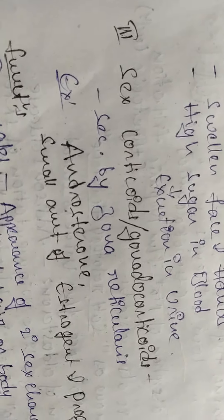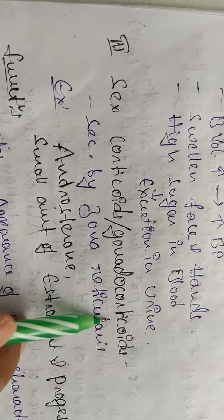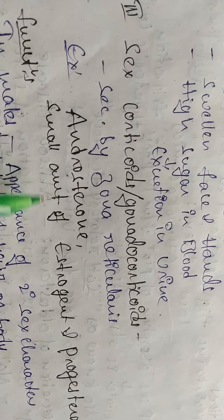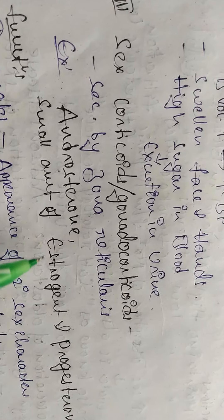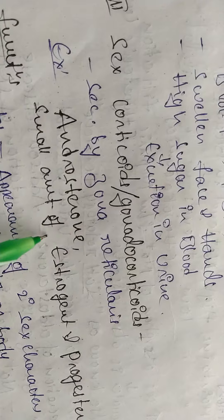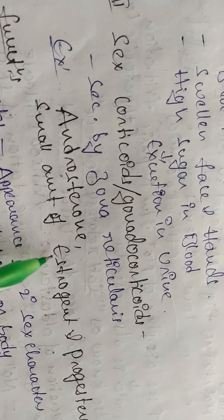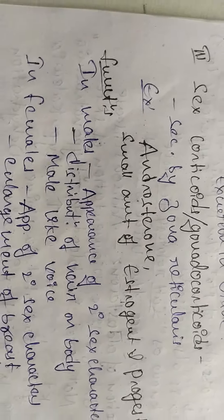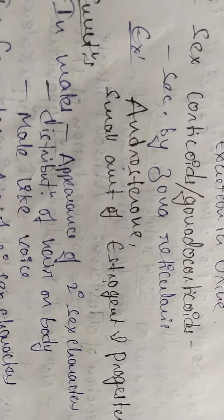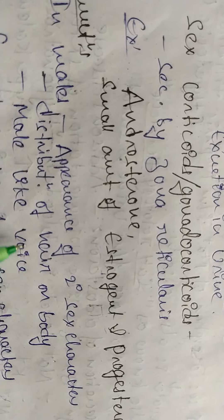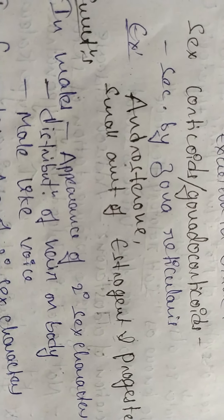The third type of hormones from the adrenal cortex are sex steroids, also called sex corticoids or gonadocorticoids. These are secreted by zona reticularis. An example is androsterone. Small amounts of estrogen and progesterone are also released. In males, these are helpful in the appearance of secondary sex characters and distribution of hair on the body.